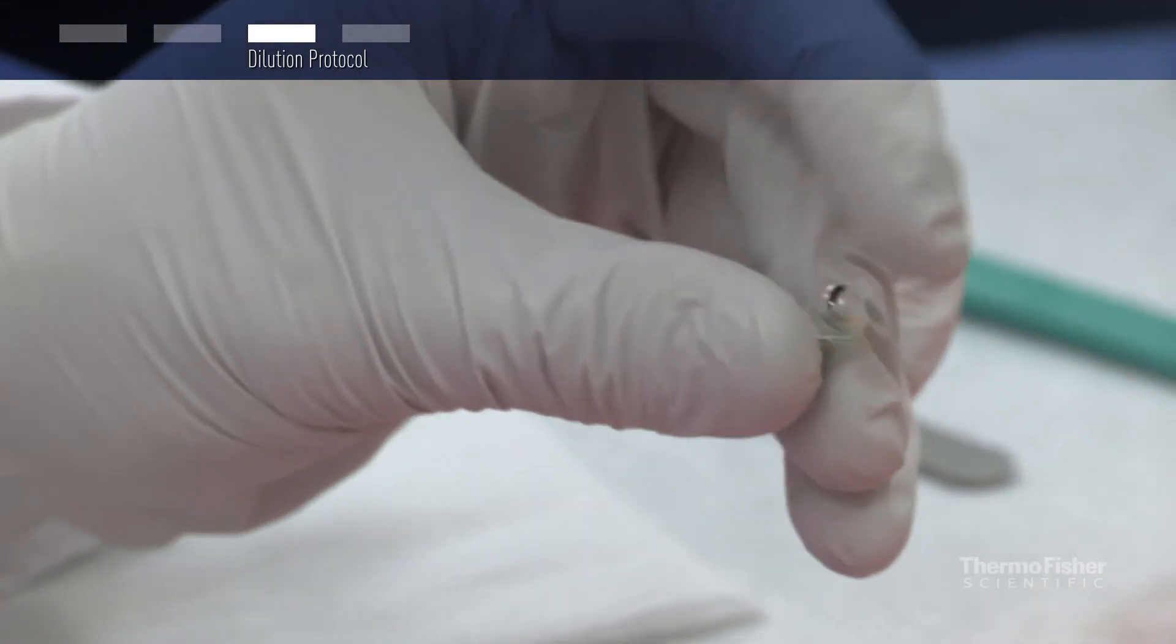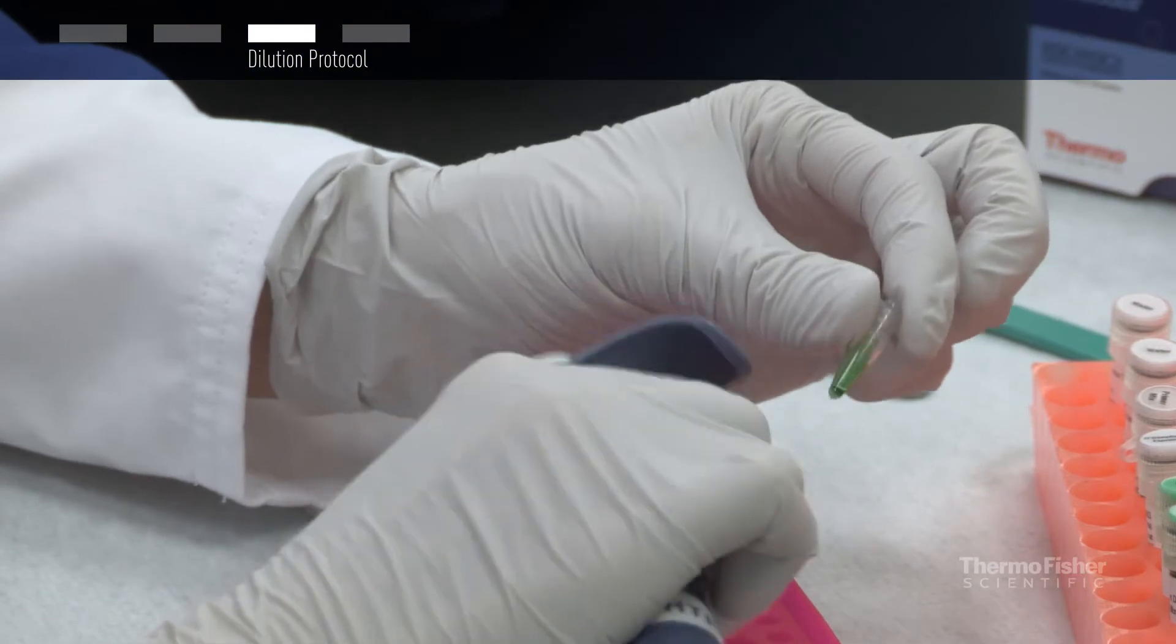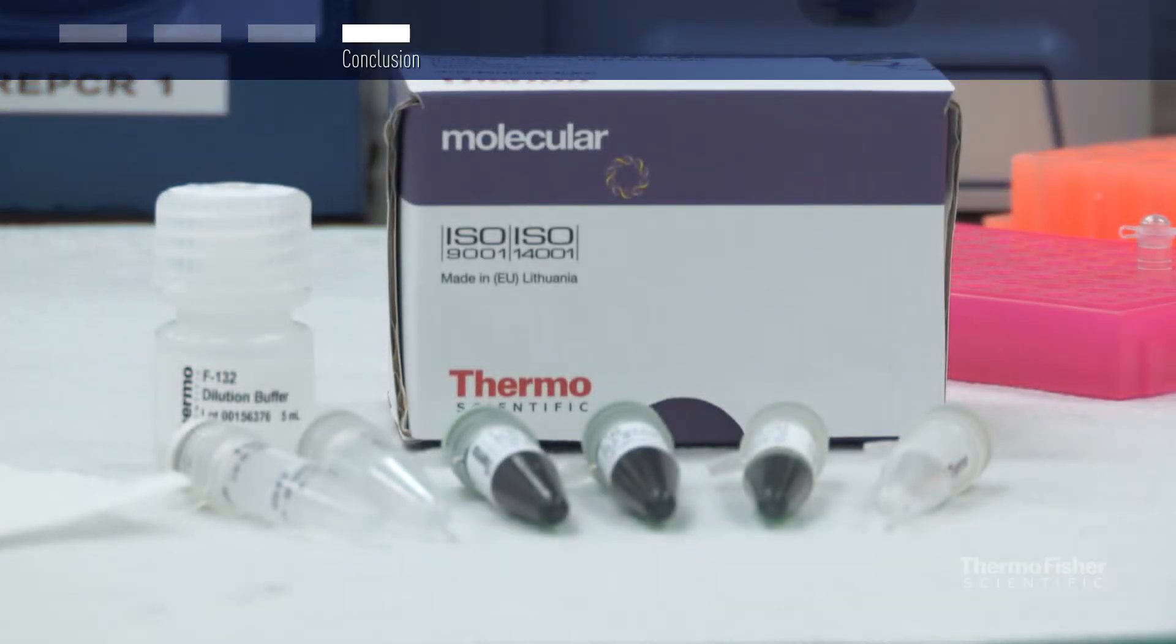Samples and dilution buffers can be stored before use in PCR. Reliable and reproducible results can be obtained from samples stored at different conditions.